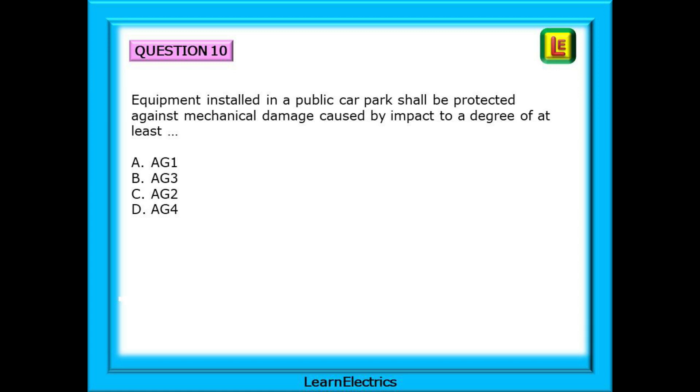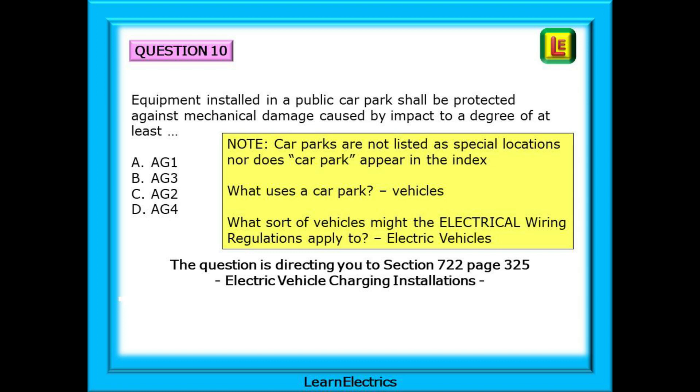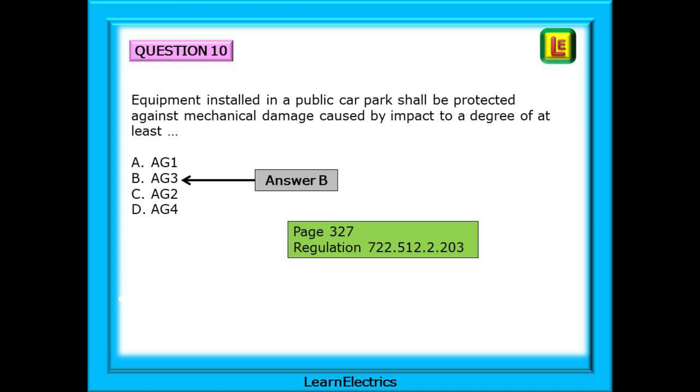And finally question number 10: Equipment installed in a public car park shall be protected against mechanical damage caused by impact to a degree of at least... Note that car parks are not listed at special locations nor does car park appear in the index. But what sort of vehicles might the electrical wiring regulations apply to? It has to be electric vehicles and that is where to look. Page 3 lists section 722 as electric vehicle charging installations and sends us to page 325. On page 327 is the answer. Regulation 722.512.2.203 tells us to choose answer B, AG.